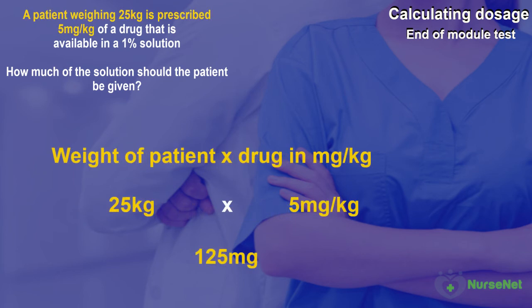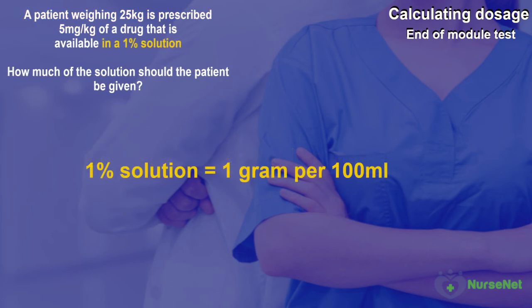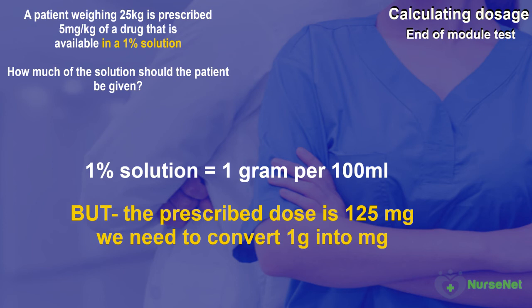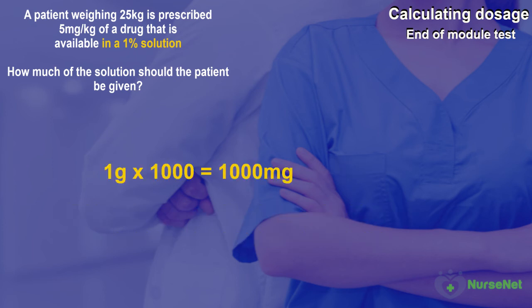So let's work out the prescribed dose. A patient weighing 25kg is prescribed 5mg per kilogram. We multiply the patient's weight of 25kg by 5mg per kilogram, which gives us a total of 125mg. Now we have the prescribed dose, we need to work out the stock dose. The stock dose is represented as a 1% solution, which is the same as 1g dissolved in 100ml of solution. We need to convert 1g into milligrams: 1 multiplied by 1000 gives us 1000mg.